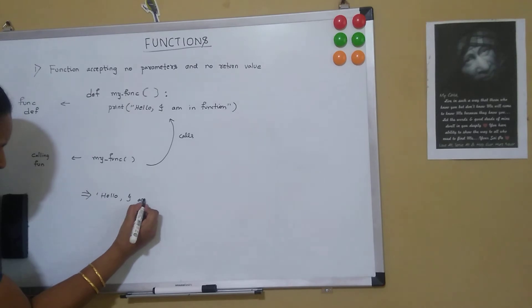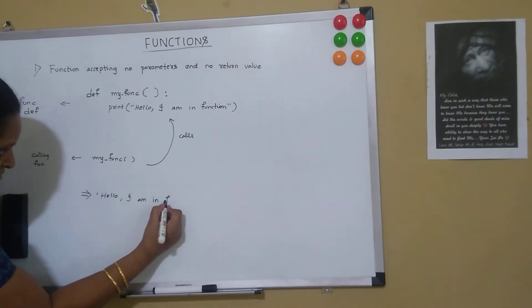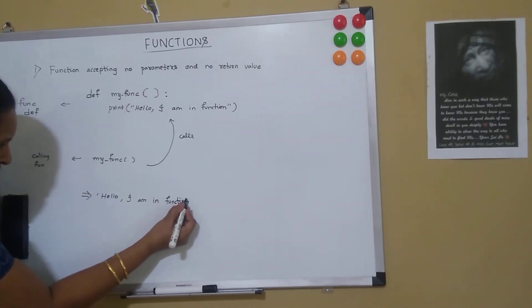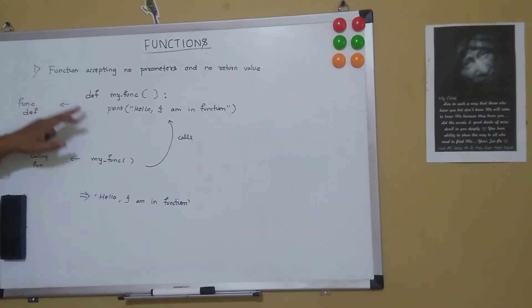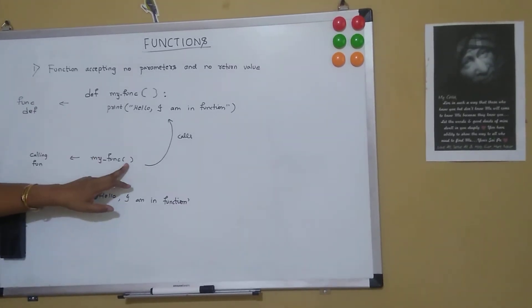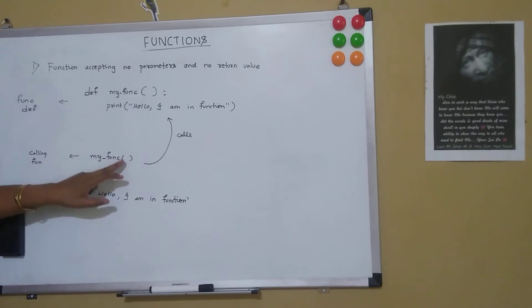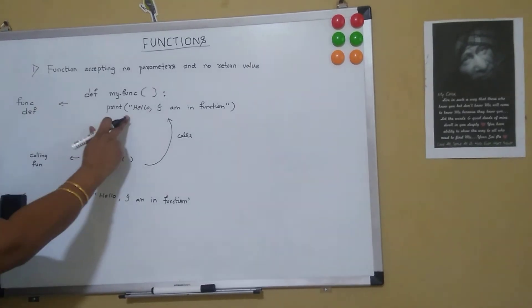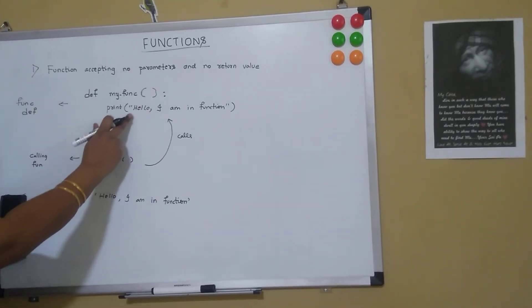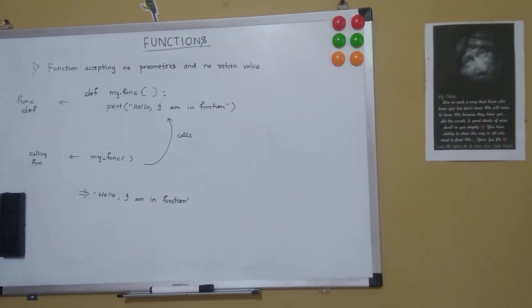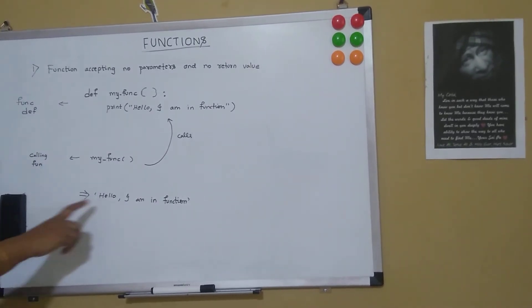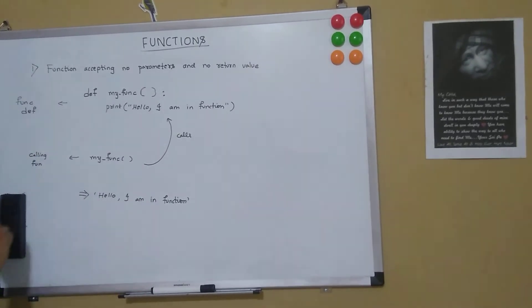The output 'hello I am in function' gets printed on the console. So here the function is not accepting any parameters, we are not passing any parameters, and we are not getting any return value from the function. This is a simple function which prints 'hello I am in function'.